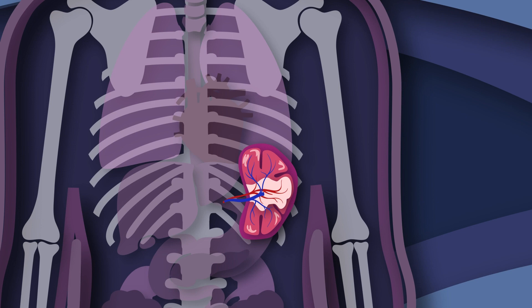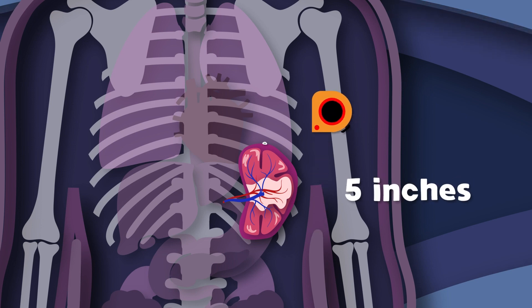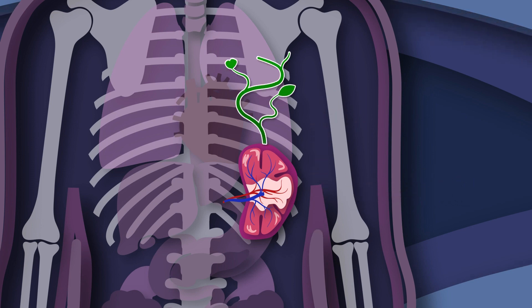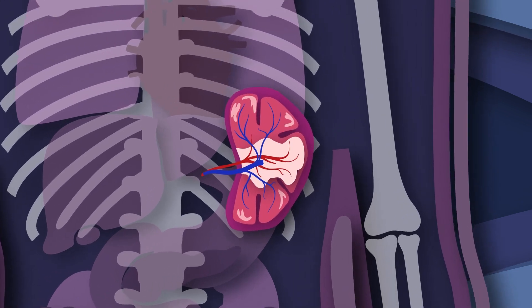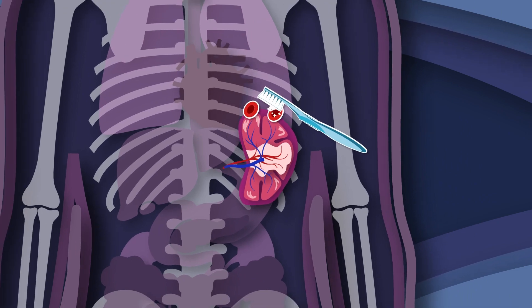I am your spleen. You will learn what this means. I am purple, 5 inches long, and I'm shaped like a bean. I'm your spleen. You will learn what this means. I produce antibodies and I keep your blood clean.